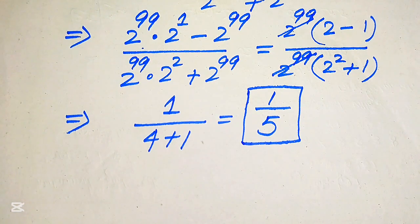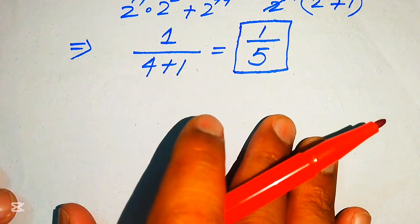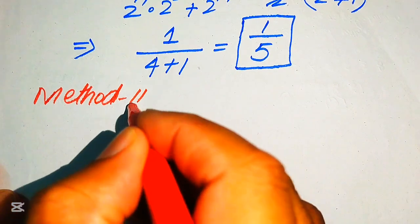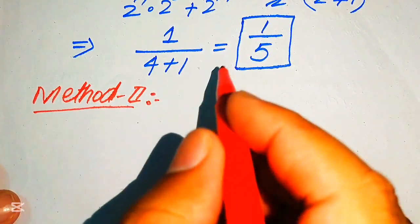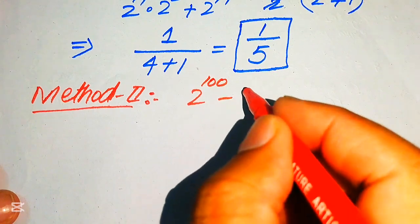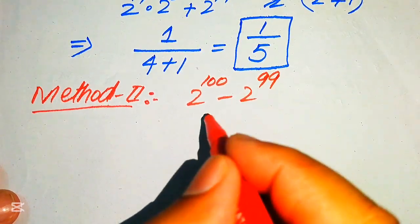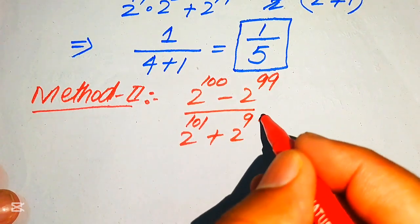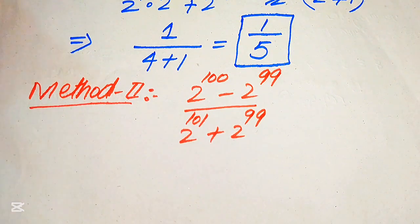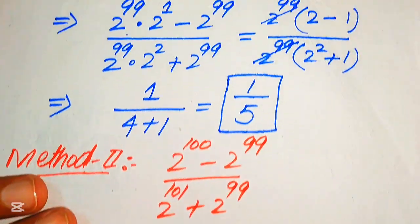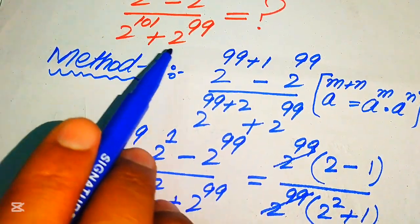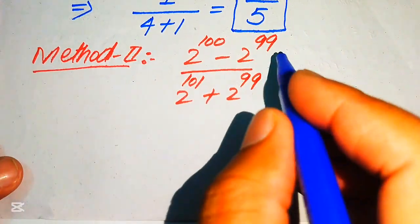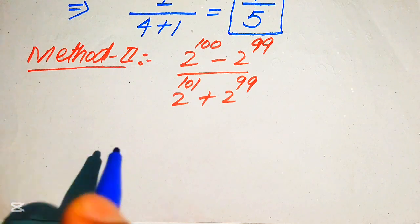Now we move forward and solve this problem using a second method. We copy down the given expression: 2 to the power of 100 minus 2 to the power of 99, divided by 2 to the power of 101 plus 2 to the power of 99. In the first method we converted all exponents in the form of 99; in the second method we convert all exponents in the form of 100.